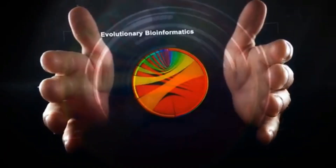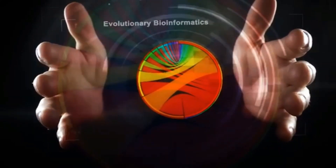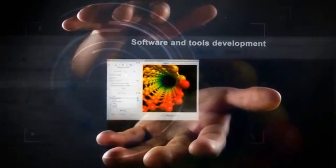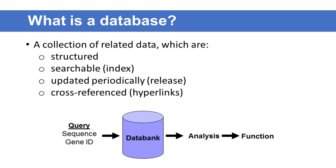As human-related databases continue to grow, not only in count but also in volume, challenges are ahead in big data storage, processing, exchange, and curation. A database is a collection of information that is organized so that it can be easily accessed, managed, and updated. Databases are composed of computer hardware and software for data management. The chief objective of developing a database is to organize data in a set of structured records to enable easy retrieval of information.